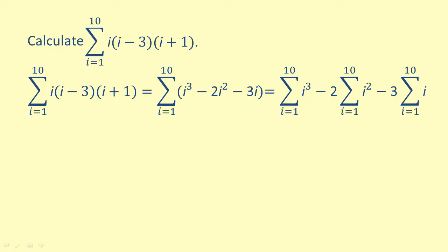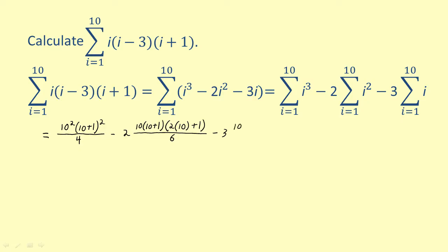Now we can substitute into each of our formulas for the sum of i cubed, i squared, and i. So we get 10 squared times the quantity 10 plus 1 squared all over 4, minus 2 times 10 times the quantity 10 plus 1 times the quantity 2 times 10 plus 1 all over 6, minus 3 times 10 times the quantity 10 plus 1 all over 2.